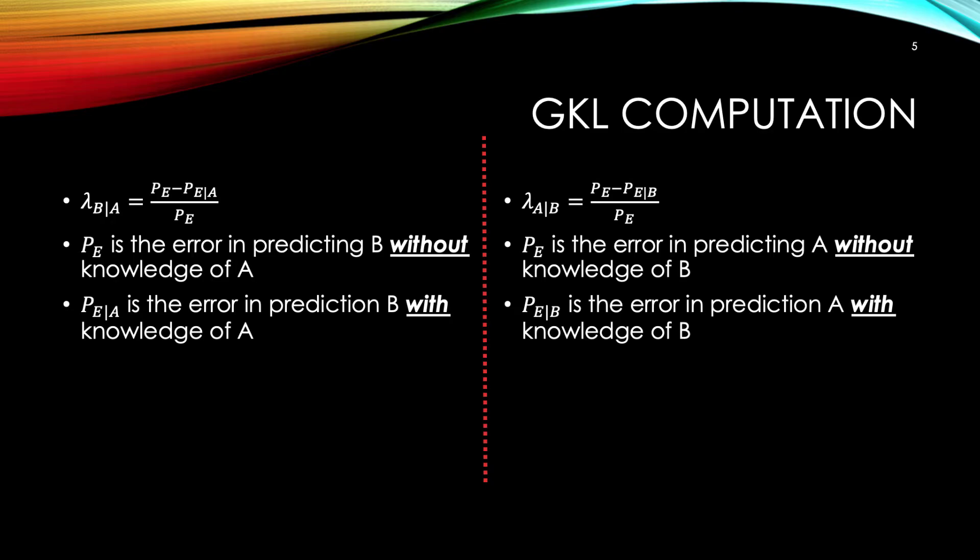Don't freak out on this slide. This slide is just showing how to compute GKL for when A is in the row or when B is in the row. The left shows when A is in the row, meaning the computation of GKL of B given A. The right shows when B is in the row, meaning the computation of GKL of A given B. Let me say it differently. The left side is the equation for computing lambda when A is the predictor. The right side is the equation for computing lambda when B is the predictor.